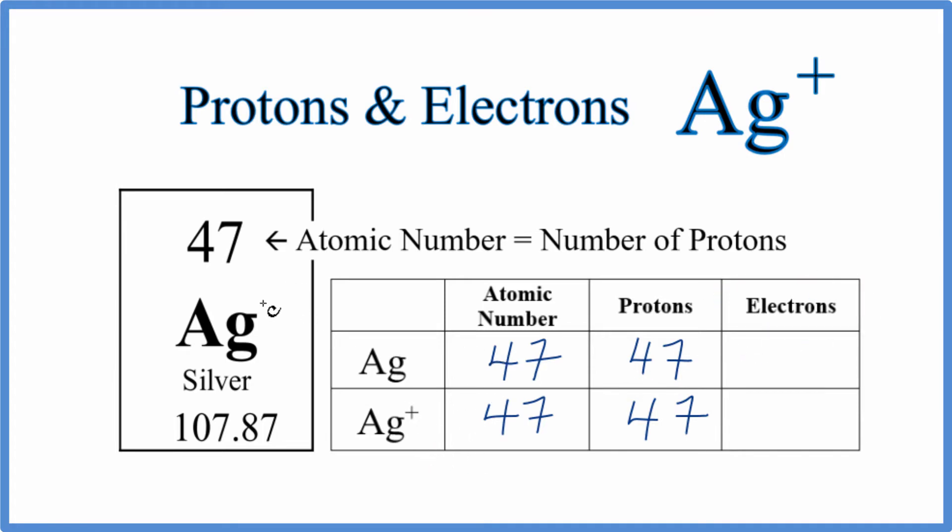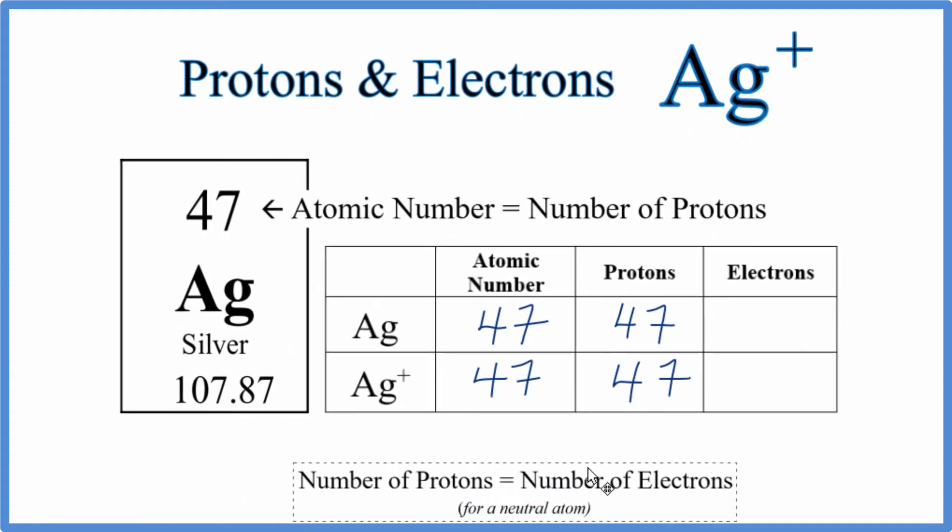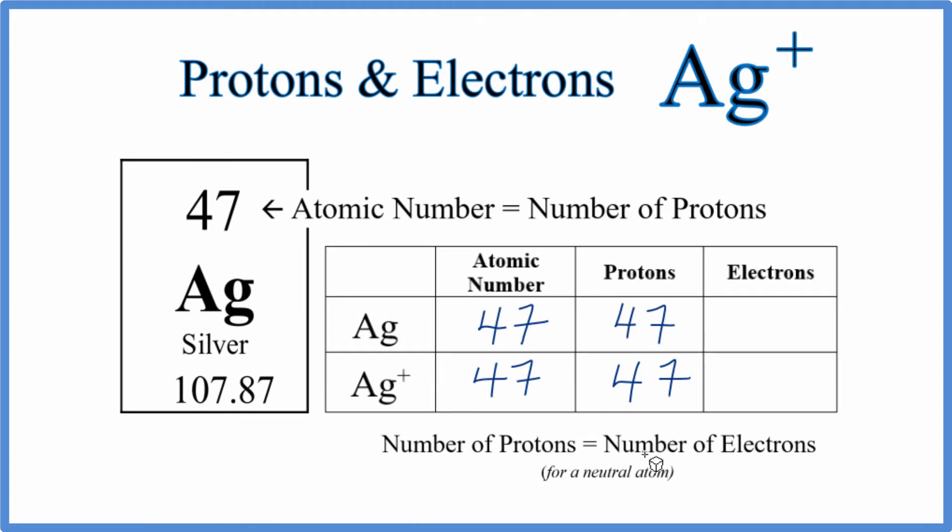For silver, there's no negative or positive sign after it on the periodic table. It's a neutral element. When we have a neutral element, the number of protons equals the number of electrons. 47 protons, 47 electrons. And that makes sense. The negatives and the positives balance out, giving you a neutral element.